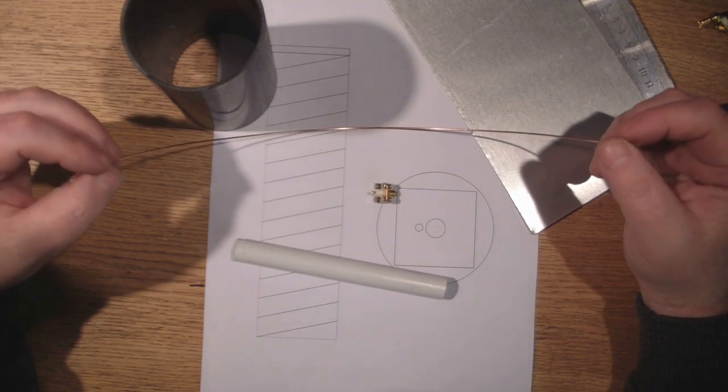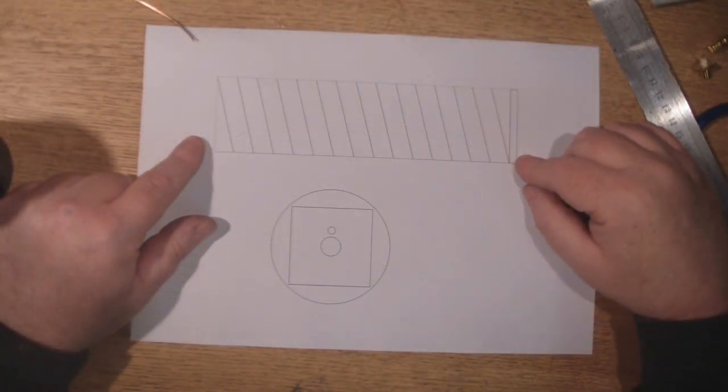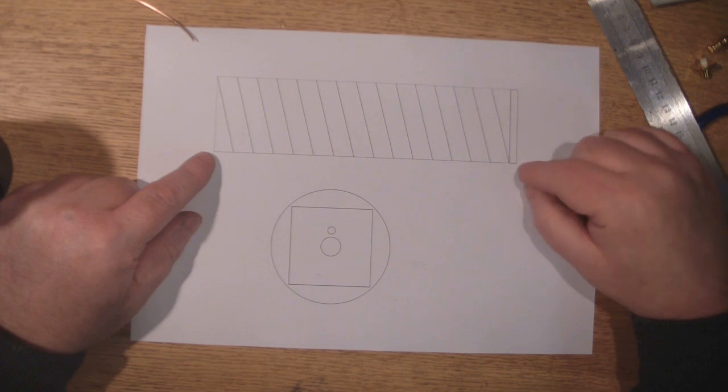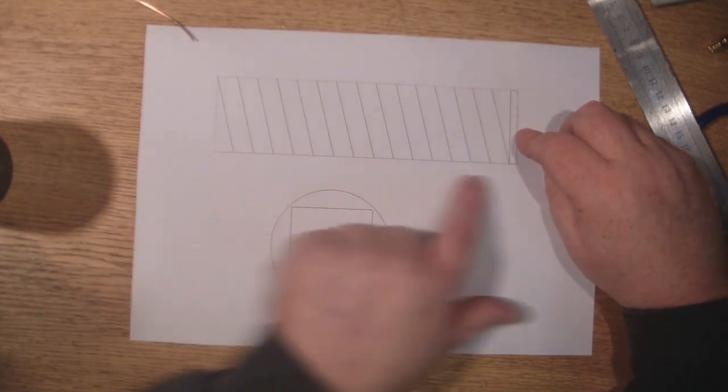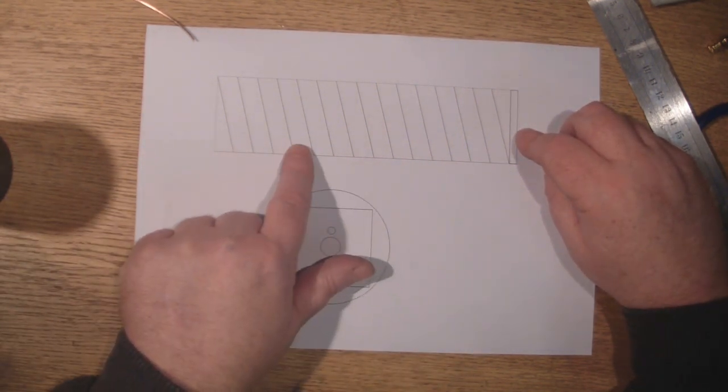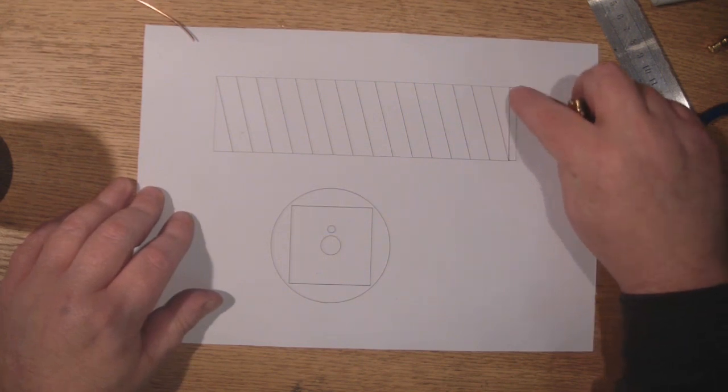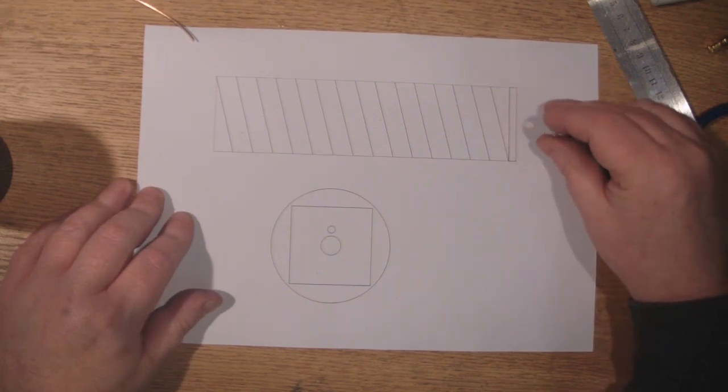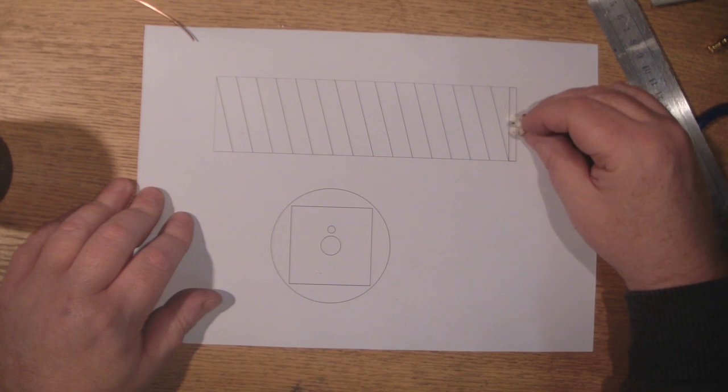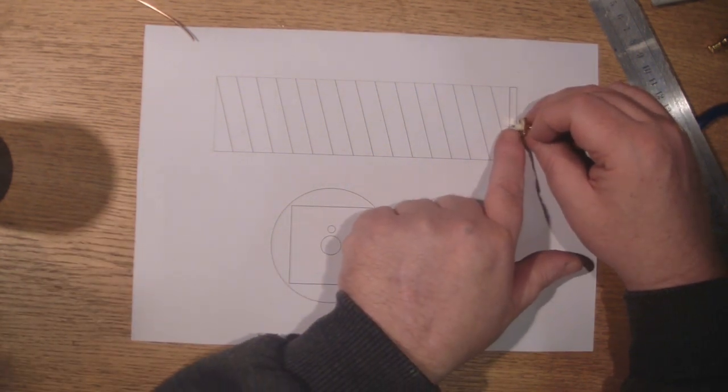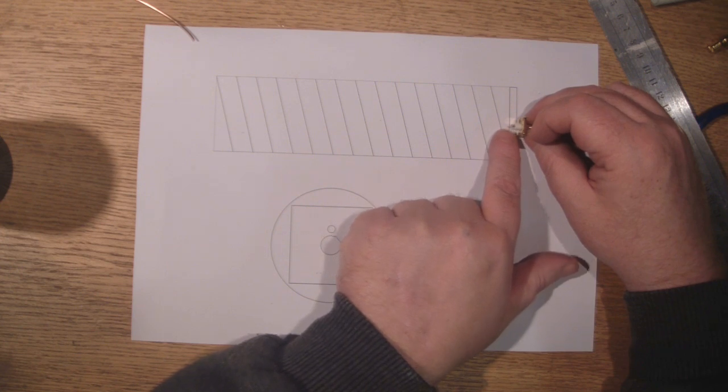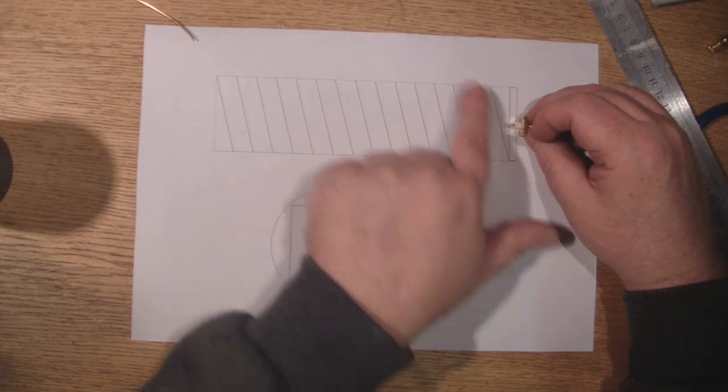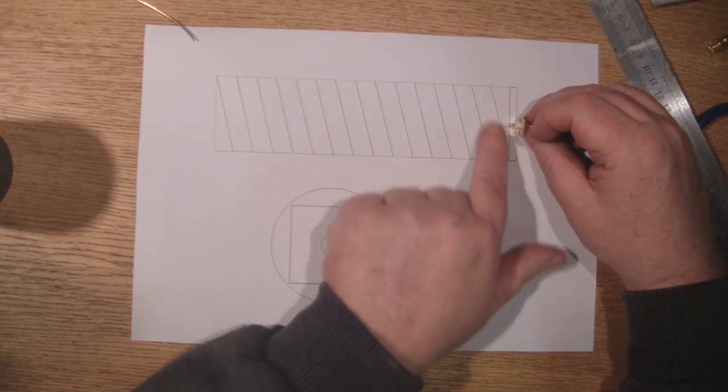You're going to have to download and print out a template for this—there'll be a link in the description. You can cut this to however many turns you want. I made this little gap at the bottom that takes into consideration the dielectric of the panel mount, so we can solder here onto the center connector at a nice angle.